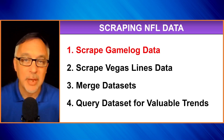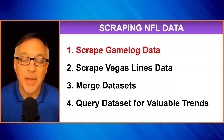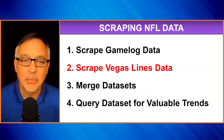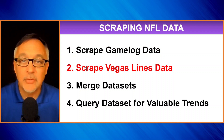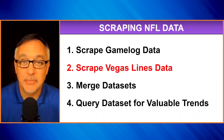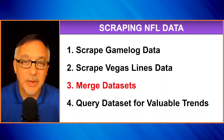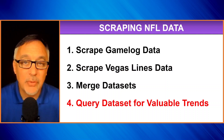The first thing I'm going to do is show you how to scrape game log data from a very popular website. Game log data contains things like rushing yards, passing yards, first downs, time of possession, and so on. Then we're going to scrape the Vegas lines data. This particular website has things like spread and total from previous seasons for all the NFL games — very valuable information. Then we're going to take these two data sets and merge them together to get one big data set. And finally, we're going to use this big data set to find a trend that I used in 2024 and that hit at a very high rate. So stay tuned for that.